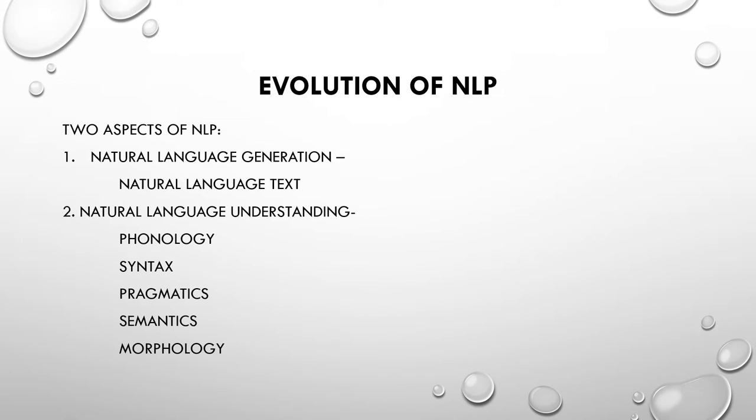Evaluation of NLP has two aspects. Natural language generation and natural language understanding. Natural language generation is again divided into natural language text. Natural language understanding is again divided into five levels: Phonology, Syntax, Pragmatics, Semantics and Morphology.